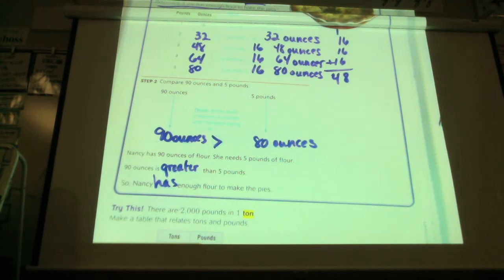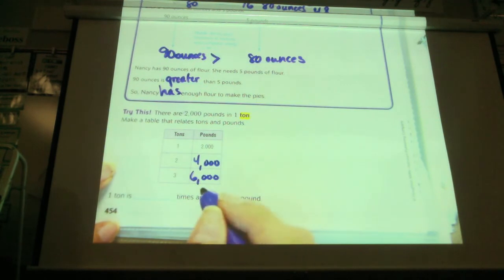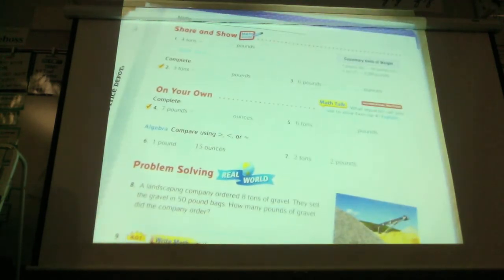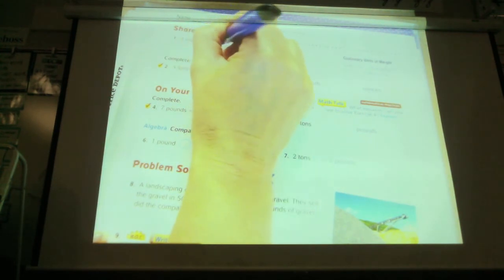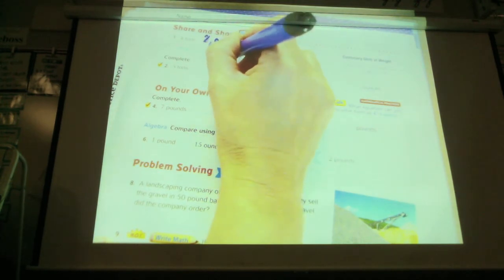There are 2,000 pounds in 1 ton. Make a table that relates tons to pounds. If there's 2,000 pounds in 1 ton, how many pounds are in 2 tons? 4,000. Very good. So then 3 tons are 6,000. 1 ton is how many times as heavy as a pound? 2,000. You want to think 1,000 because it's a nice even number, but it's actually 2,000. 4 tons is how many pounds? 4 tons is equal to 8,000 pounds. And how did you find that? I know that 2,000 pounds equals 1 ton, so I did 4 times 2,000 equals 8,000. Very good.